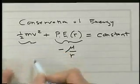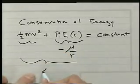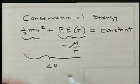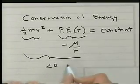And in fact, usually, when you add these two numbers together, this number is usually less than zero. In fact, that's for elliptic and circular orbits.